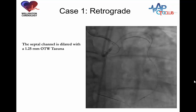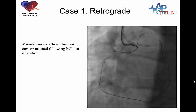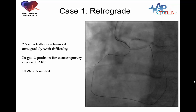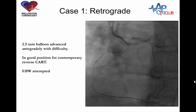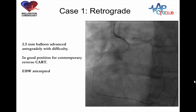Time for balloon dilation of the channel. This is a 1.25mm over-the-wire Ryuza balloon used to dilate the channel. It's important to use an over-the-wire balloon because this reduces the chance of channel injury. With dilation of the channel, we still could not get the Corsair to pass, but we could get the Mitsuki to pass into the distal vessel, though no further. A stiffer wire was attempted but would not track the channel. An XTA would track the channel, and an attempt was made to perform reverse CART using this wire, but it wasn't stiff enough to progress.